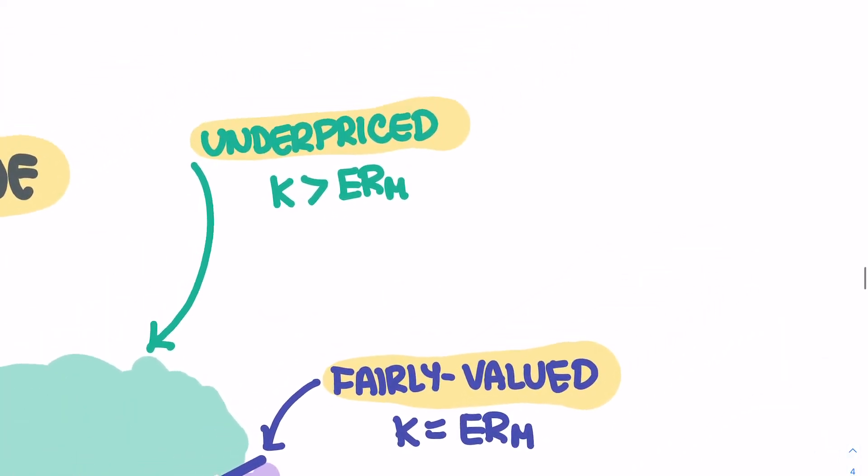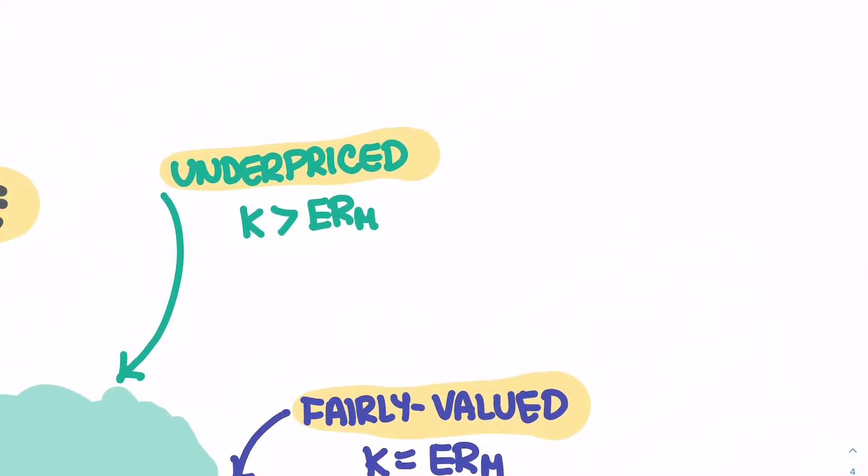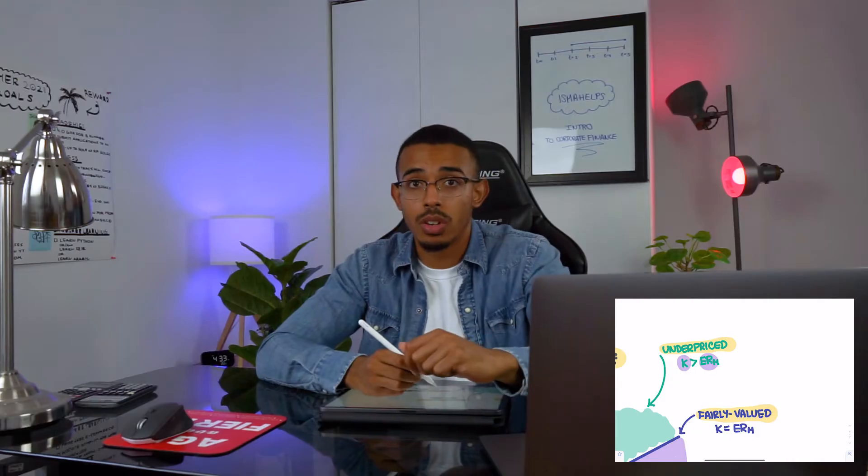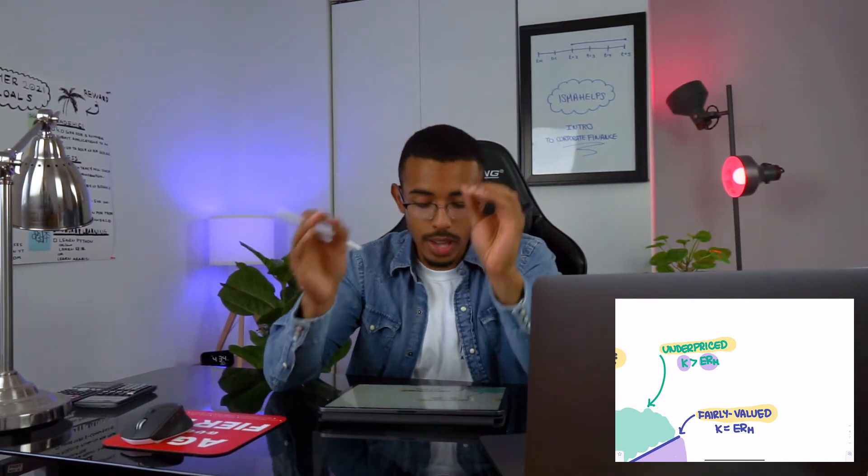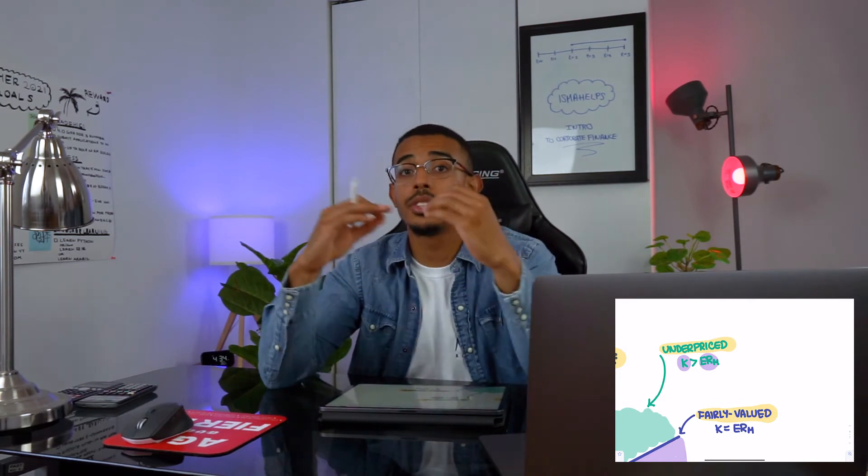is that we know that a stock or a position will be underpriced if the K you get from your SML line or your SML formula is bigger than the market return, essentially the market portfolio return. So you know that in that specific scenario, we have an underpriced security.